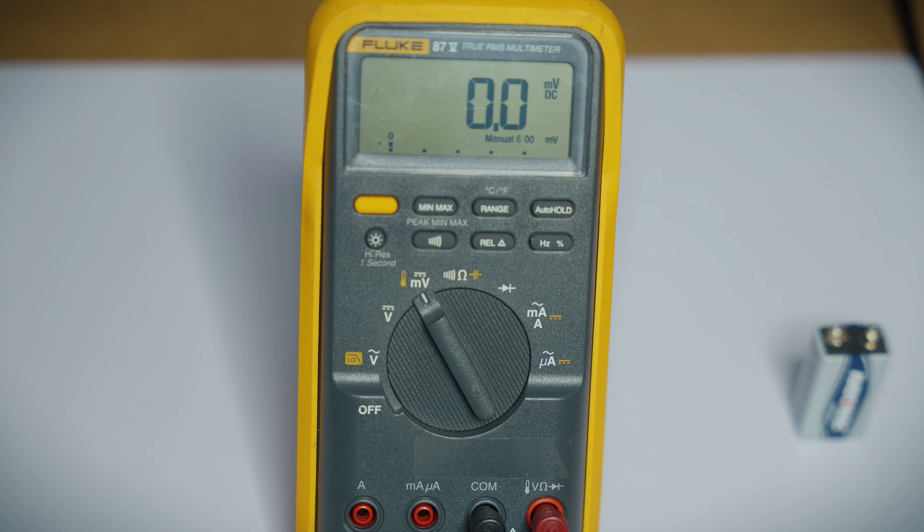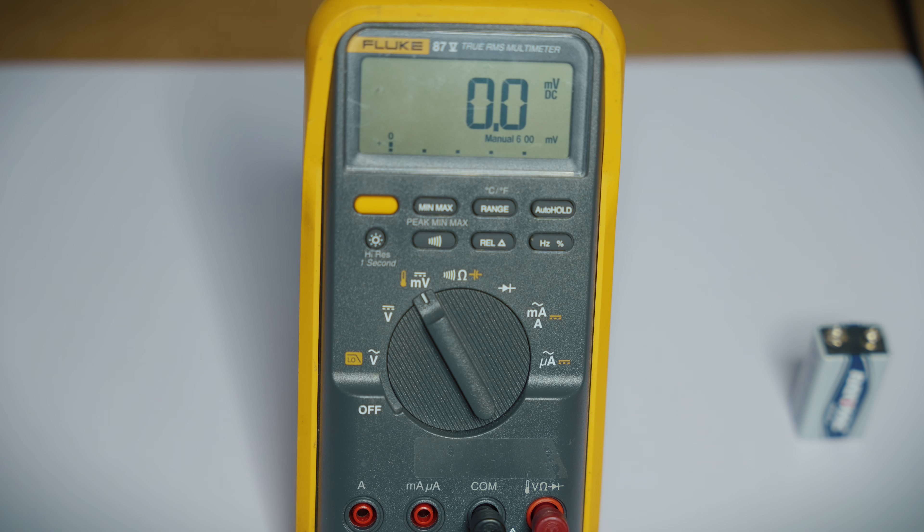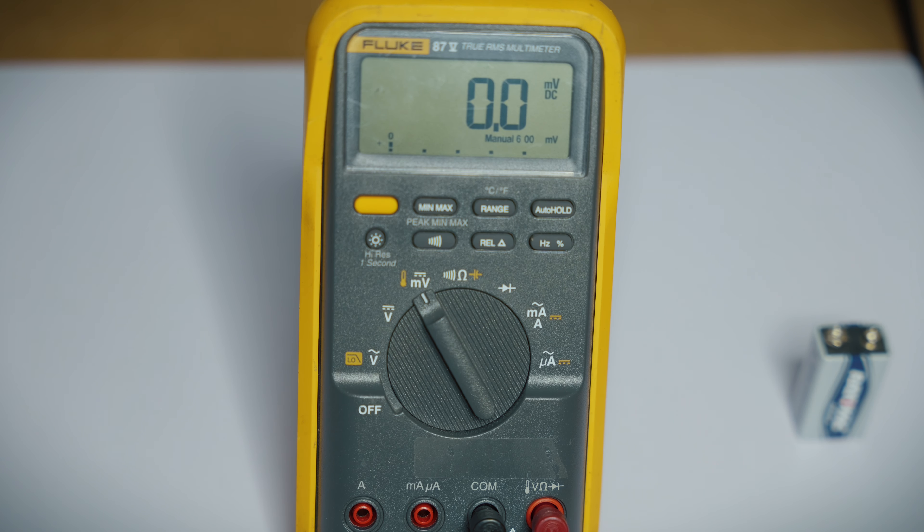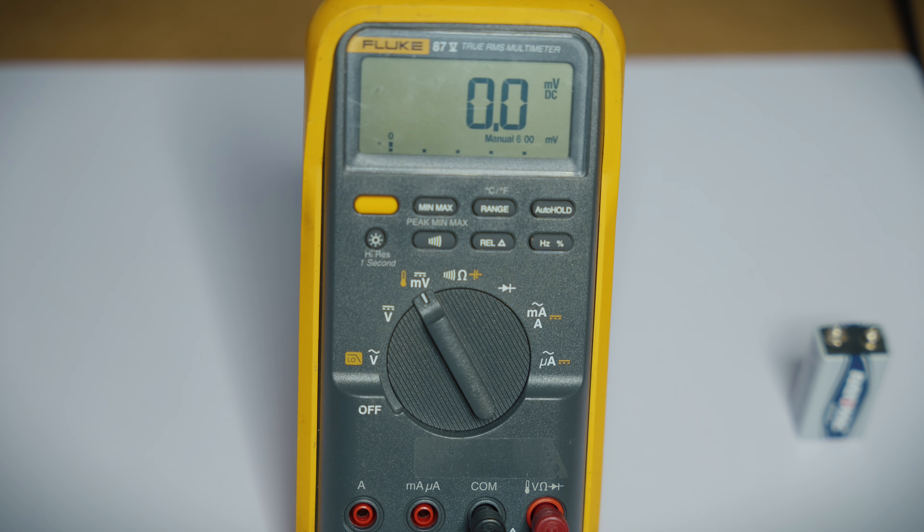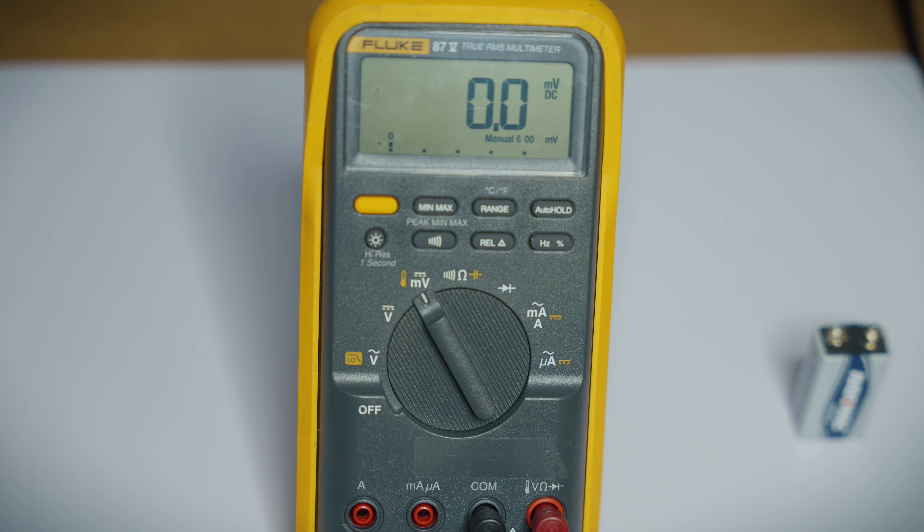So the next setting is the millivolt. And you'll notice it has the same solid line and dash line underneath it. So that's millivolts. You would use the millivolt setting to measure very small voltages. So just use the millivolt test the same you would as the DC voltage test.